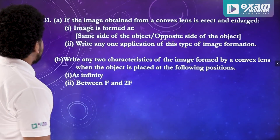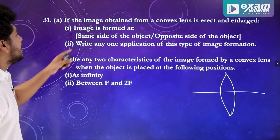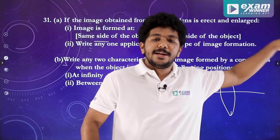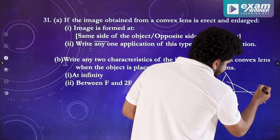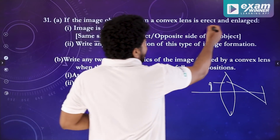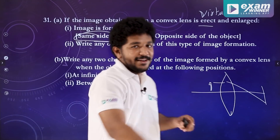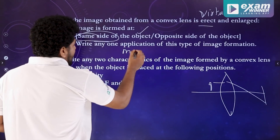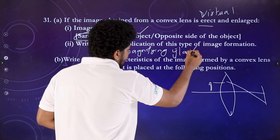The next question is 30 or 31. If the image obtained from a convex lens is erect and enlarged, the image is formed on the same side as the object — it is a virtual image. Write any one application of this type of image. In a magnifying glass, we use a convex lens. That is the application — a magnifying glass or magnifying lens.